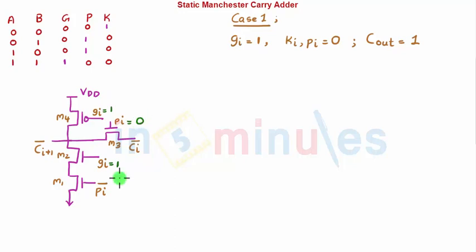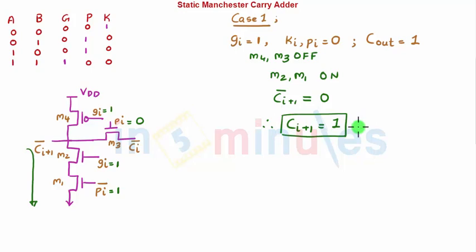When GI equals 1, that means PI is 0 and PI bar is 1. This clearly shows that M4 and M3 both are off, whereas M2 and M1 both are on. Because both are on, it will pull my output towards ground, so CI+1 bar equals 0, which means CI+1 equals 1. What we got is Cout equal to 1, which is what we were expecting. The functionality is achieved when generate signal is 1.